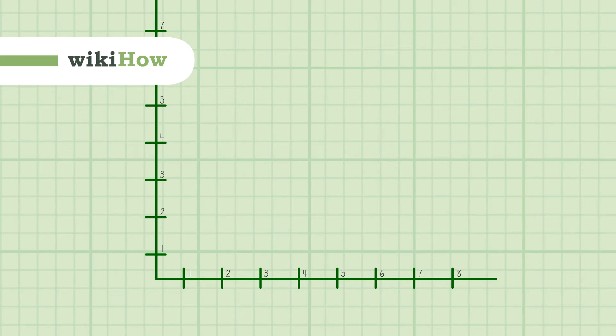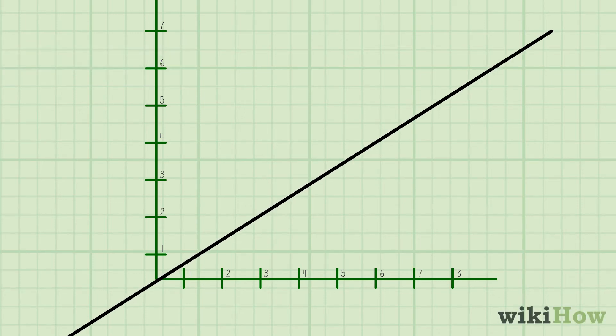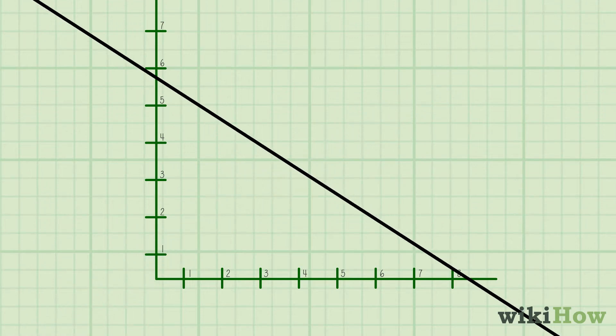In geometry, the slope of a line describes how steep the line is, as well as the direction it's going. That is, whether the line is going up or down.